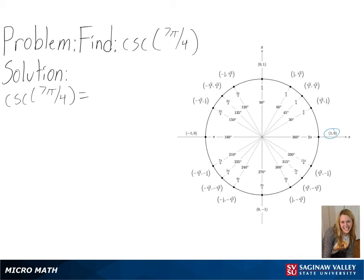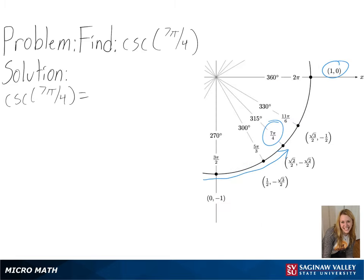We will start at (1, 0) and then move counterclockwise until we have traveled the distance of 7π over 4. Since we are finding the cosecant value, we will need to find 1 over the sine value, or 1 over the y-value, since that will give us a cosecant value.